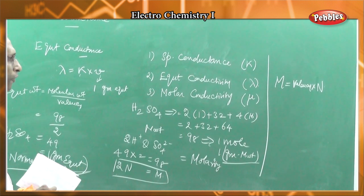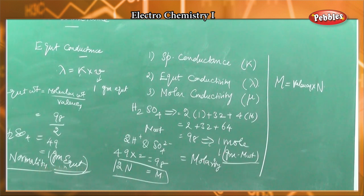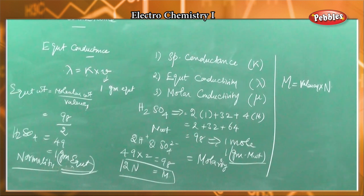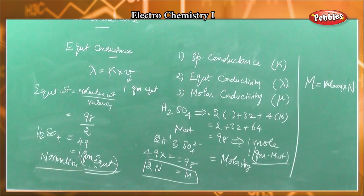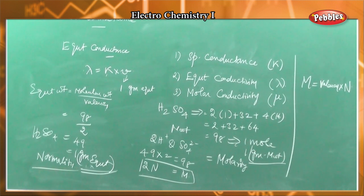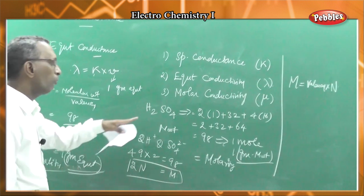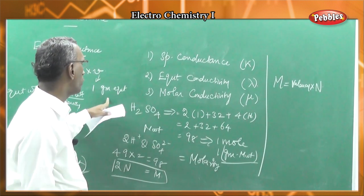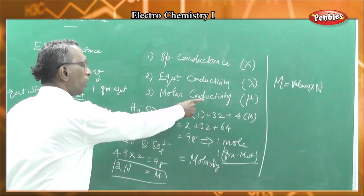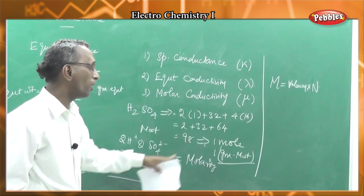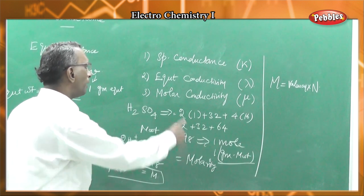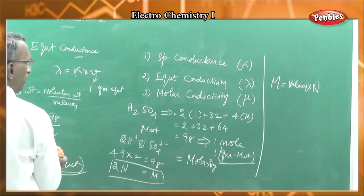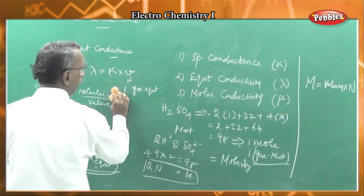There are important concentration units to note. Volume unit is cc. The two important concentration units are molarity — moles per liter — and normality — equivalents per liter. One equivalent weight of substance dissolved in 1 liter gives normality, and that leads to equivalent conductivity.